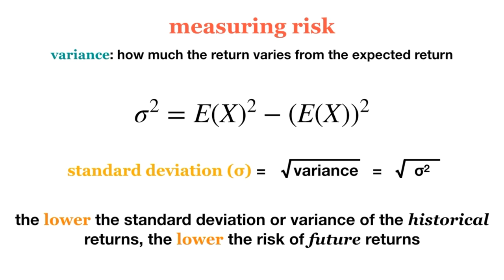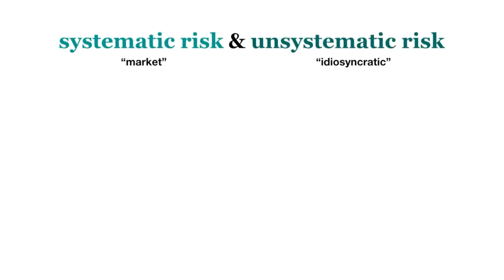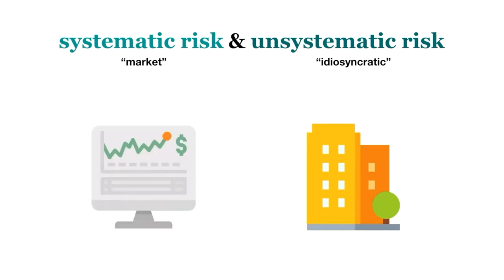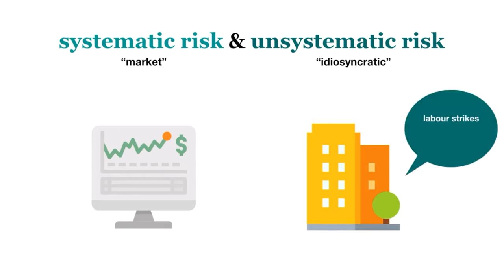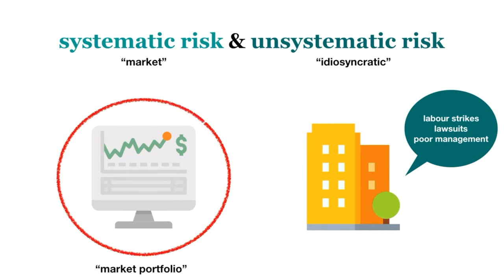We know that total risk is the variance of the returns. But total risk can be further divided into systematic, or market risk, and unsystematic, or idiosyncratic risk. Unsystematic risk refers to the risks that affect an individual asset or the specific firm, rather than the entire market or a large number of securities. Some examples of unsystematic risks include labor strikes, lawsuits, or poor company management, because these events affect only one company. If we were to own every security in the market — also known as the market portfolio — the unsystematic or diversifiable risk will be completely eliminated.